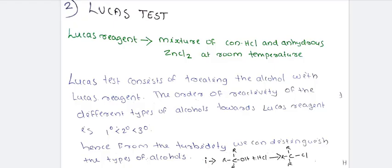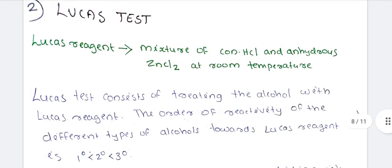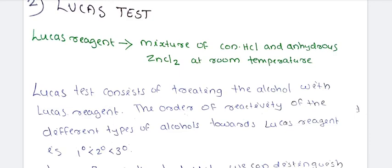Lucas test — what is the Lucas reagent? It is a mixture of concentrated HCl and anhydrous zinc chloride. Concentrated HCl and anhydrous zinc chloride together is called Lucas reagent. Primary, secondary, and tertiary alcohols are treated with Lucas reagent to distinguish them.